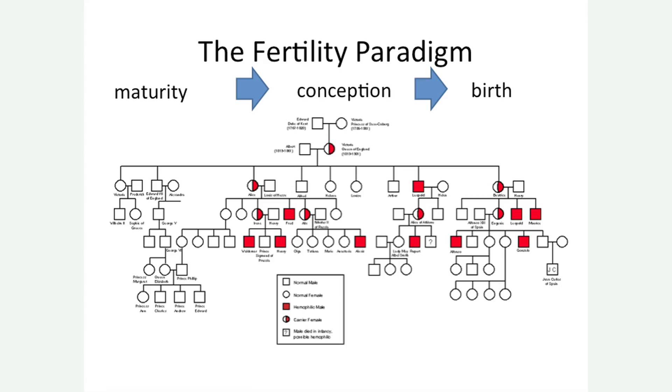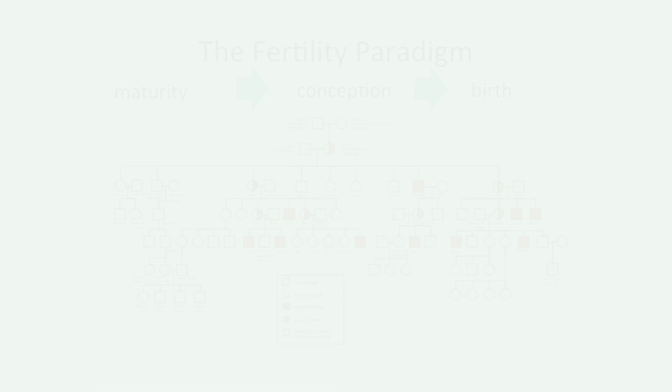For women, the fertility paradigm was that once they reached maturity, then it was really time for conception, and from there on birth. Women were designed to have their first periods in their late teens, and then really to be pregnant or breastfeeding most of their lives until the end of their reproductive time, which was usually in the late 30s.